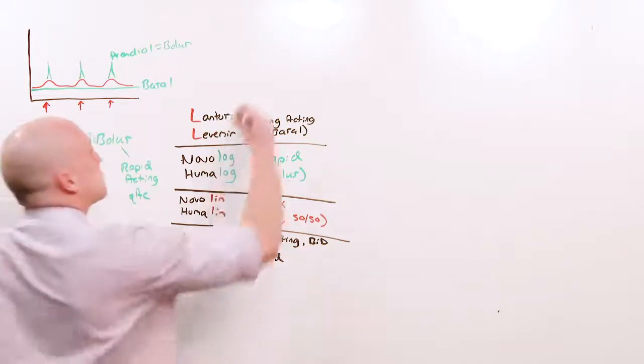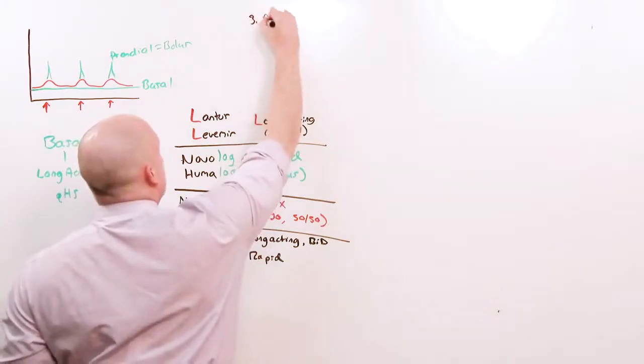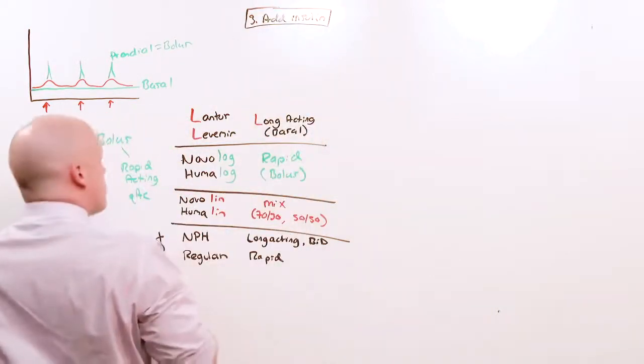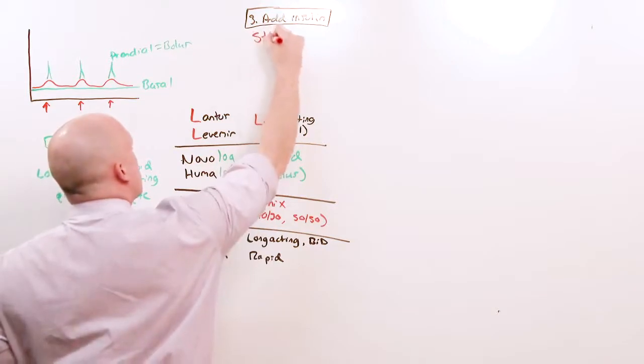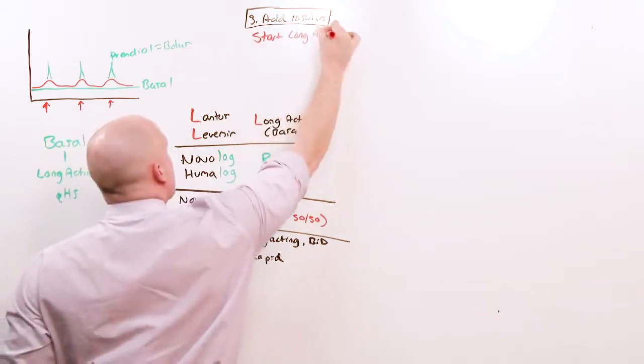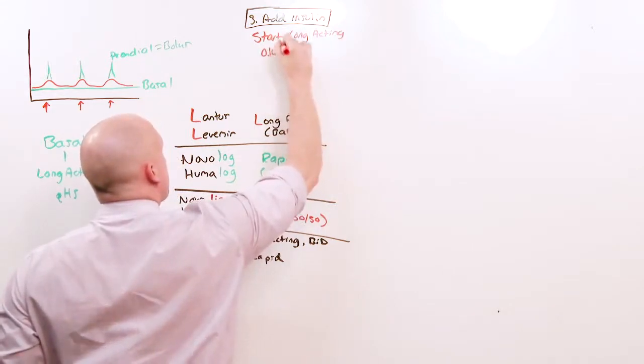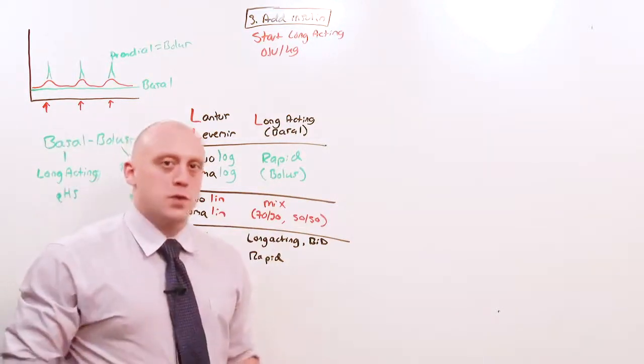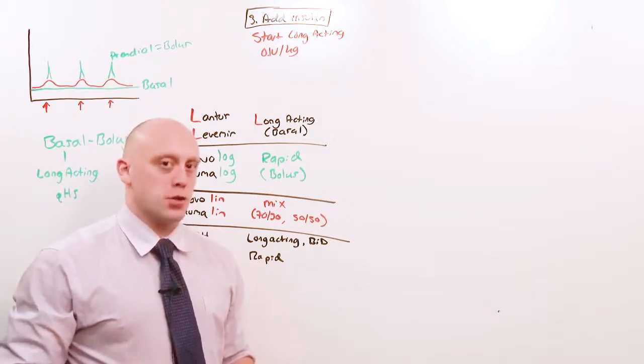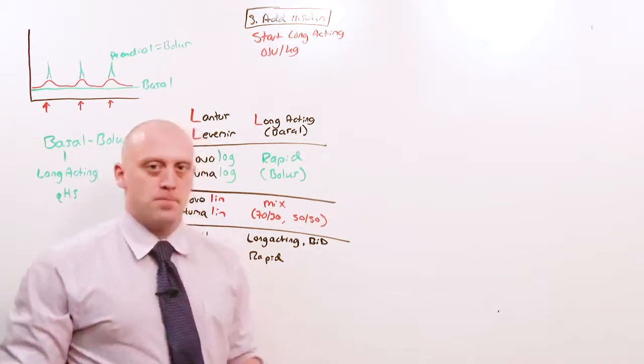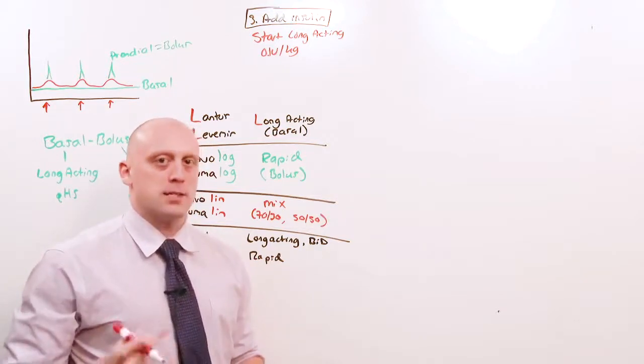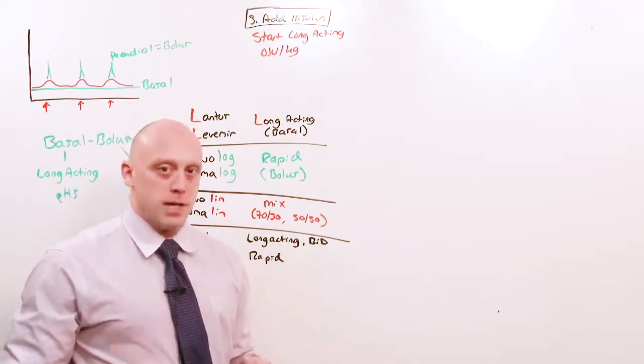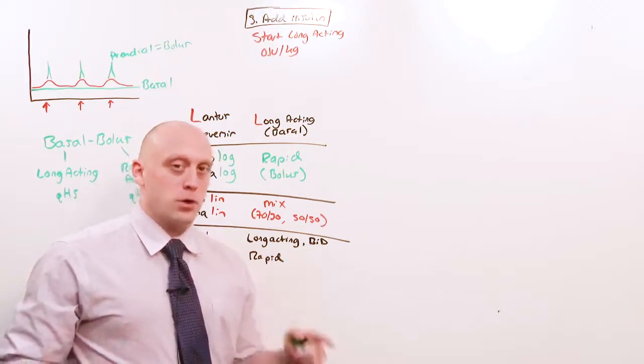All right, so if you're in the outpatient setting, you're already at step three, which was added insulin. We're going to do this the right way, right? So what you're going to do is start a long-acting at 0.1 units per kg. You start a long-acting once daily injection, and you have the patient check their sugar before breakfast. I'll explain why in a minute. And you titrate that long-acting insulin based on the fasting glucose in the morning. So you continue to increase the basal until that morning sugar is normal.